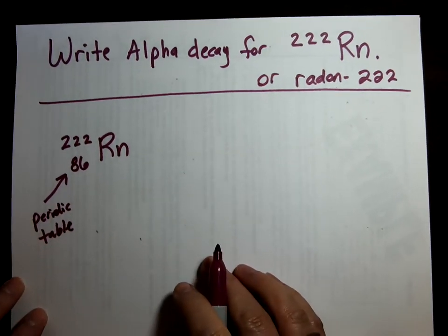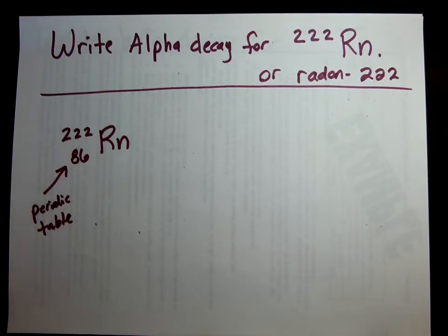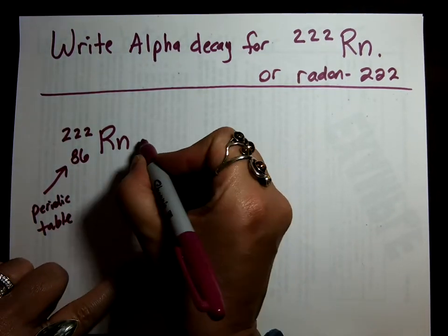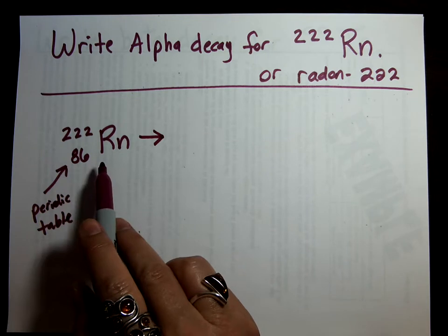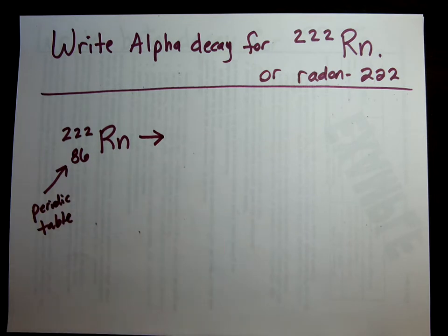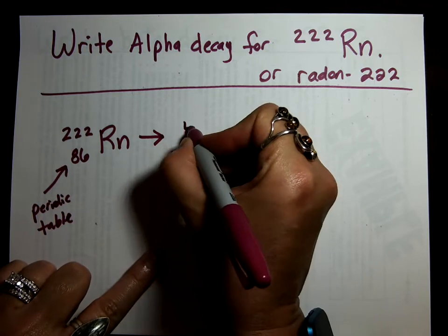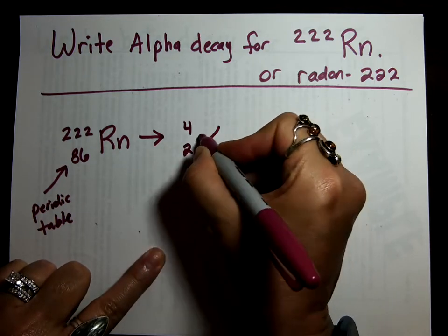Now, what comes next, hopefully you learned from our lecture video, is the arrow. Arrow is next. So we have 222 radon, arrow, and the alpha particle is emitted. That's why it's called alpha emission or alpha decay. Now, we just learned what alpha is. It is 4 over 2 alpha.